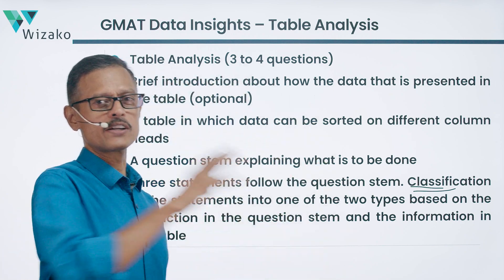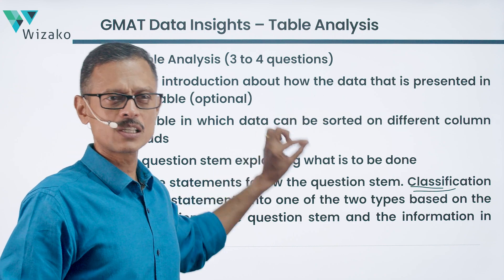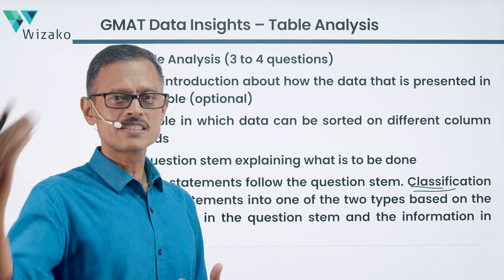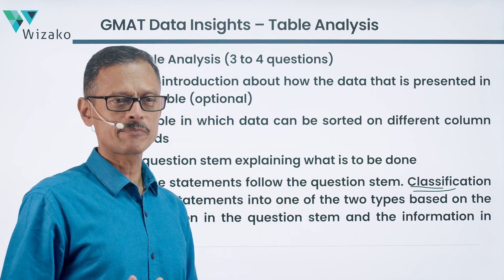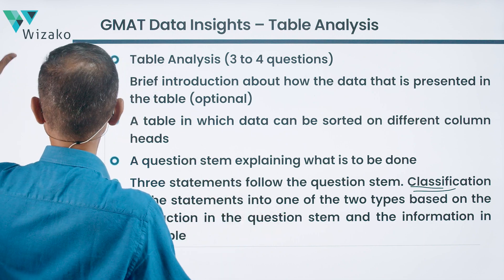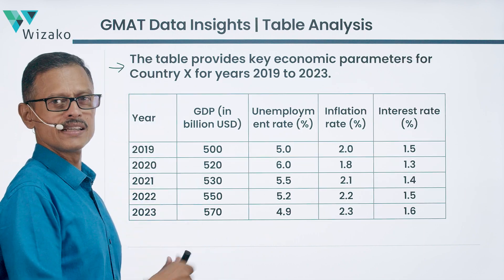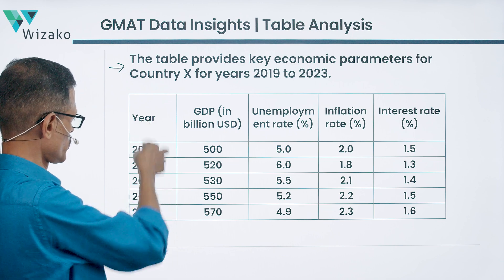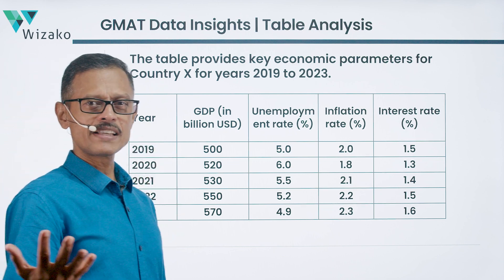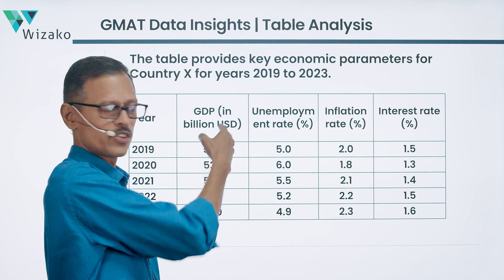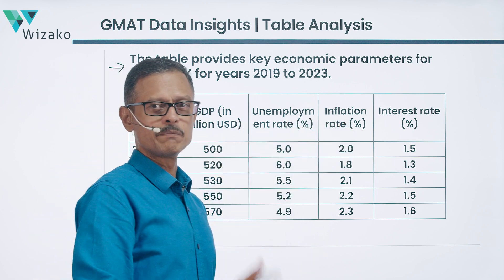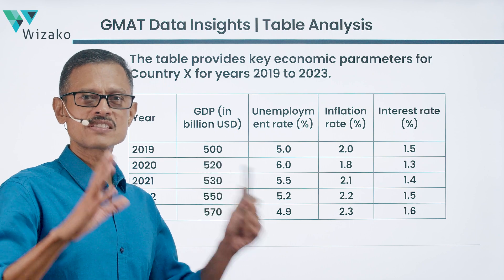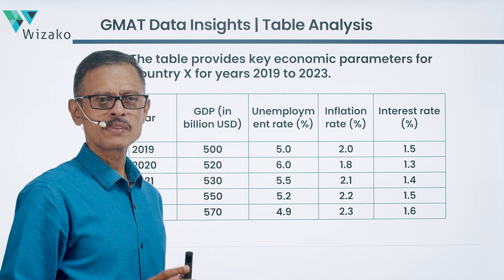There are four components: introduction to the table, the table itself, the question prompt, and the answer options. The core task is evaluating statements against the information in the table. In our example, the introduction states that the table provides key economic parameters for country X for years 2019 to 2023 — GDP in billion US dollars, unemployment rate, inflation rate, and interest rate in percentage for each of those five years.